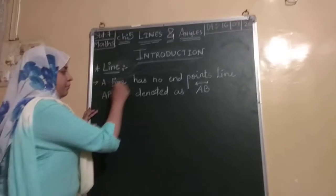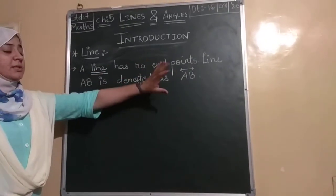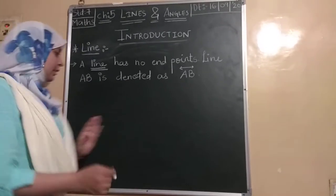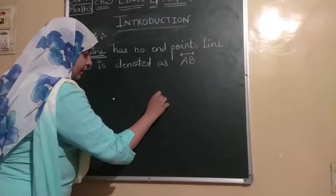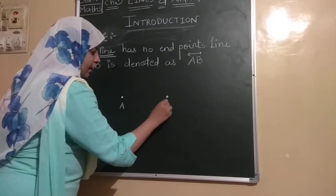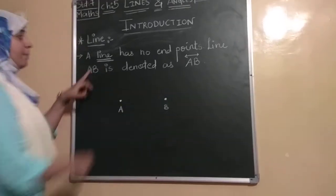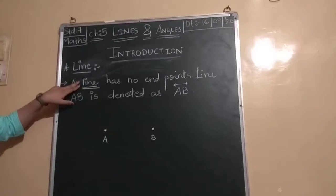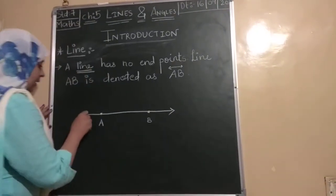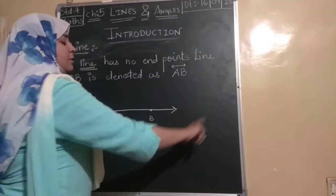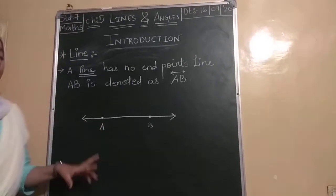Now, a line. Now we are discussing about line. A line has no endpoints. So if we draw a line, it can be stretched as much as you want from both sides. So it has no endpoints.